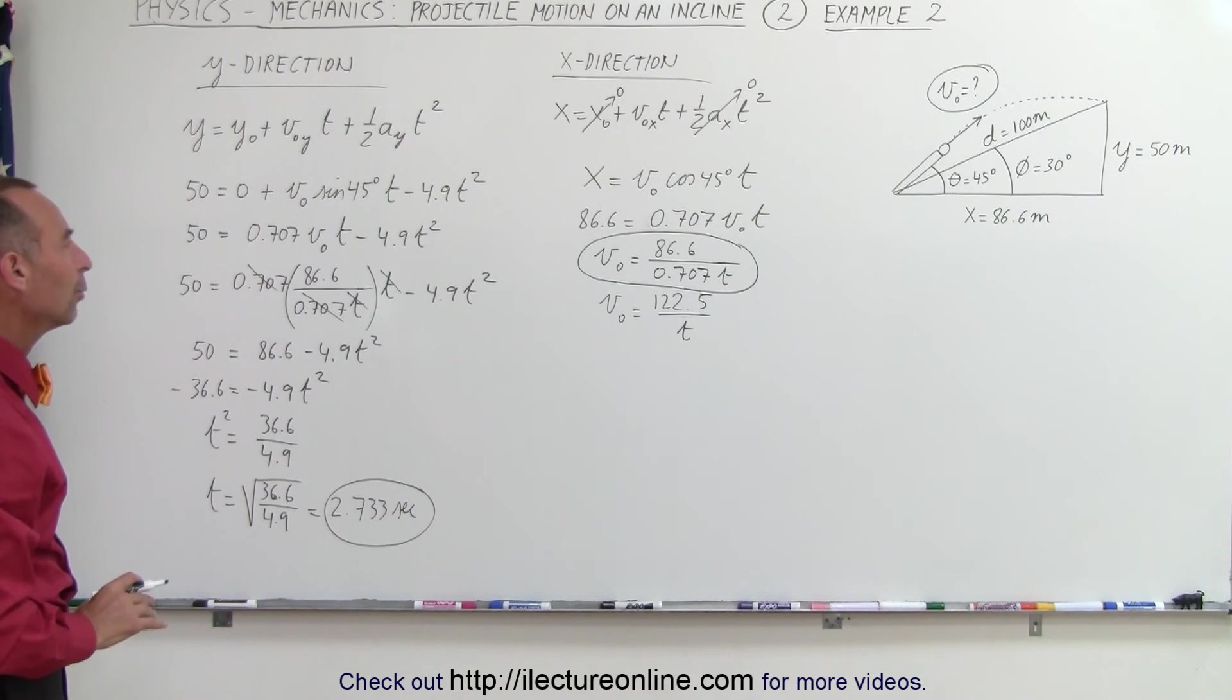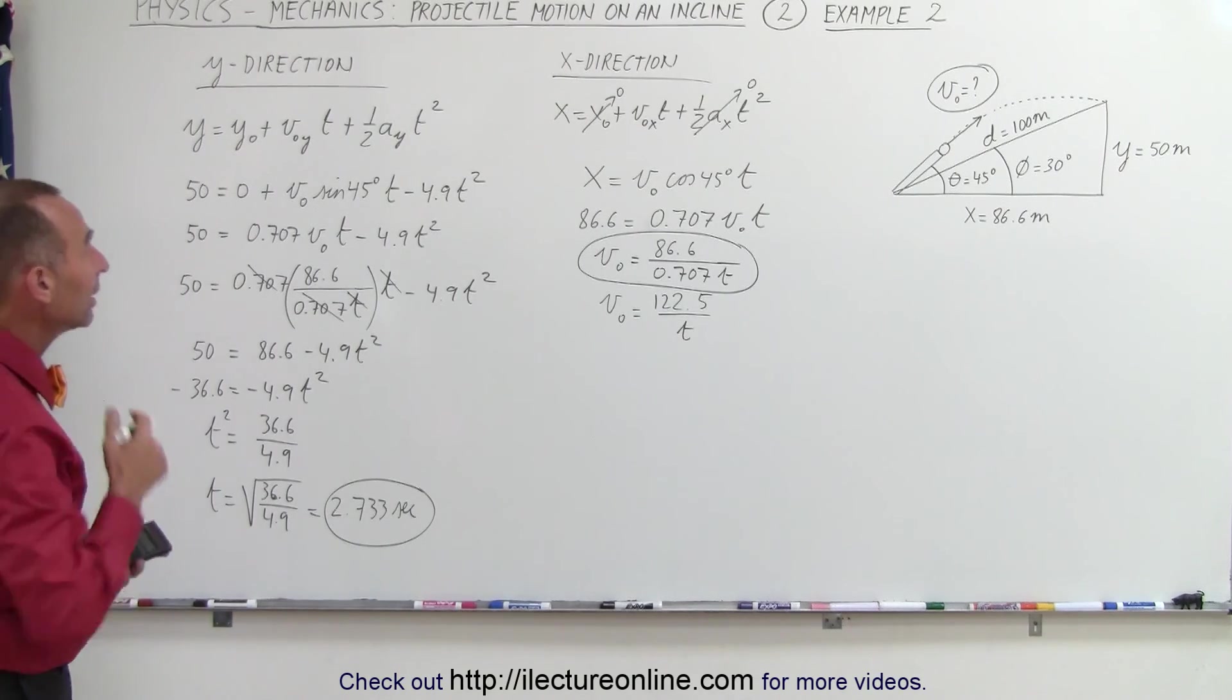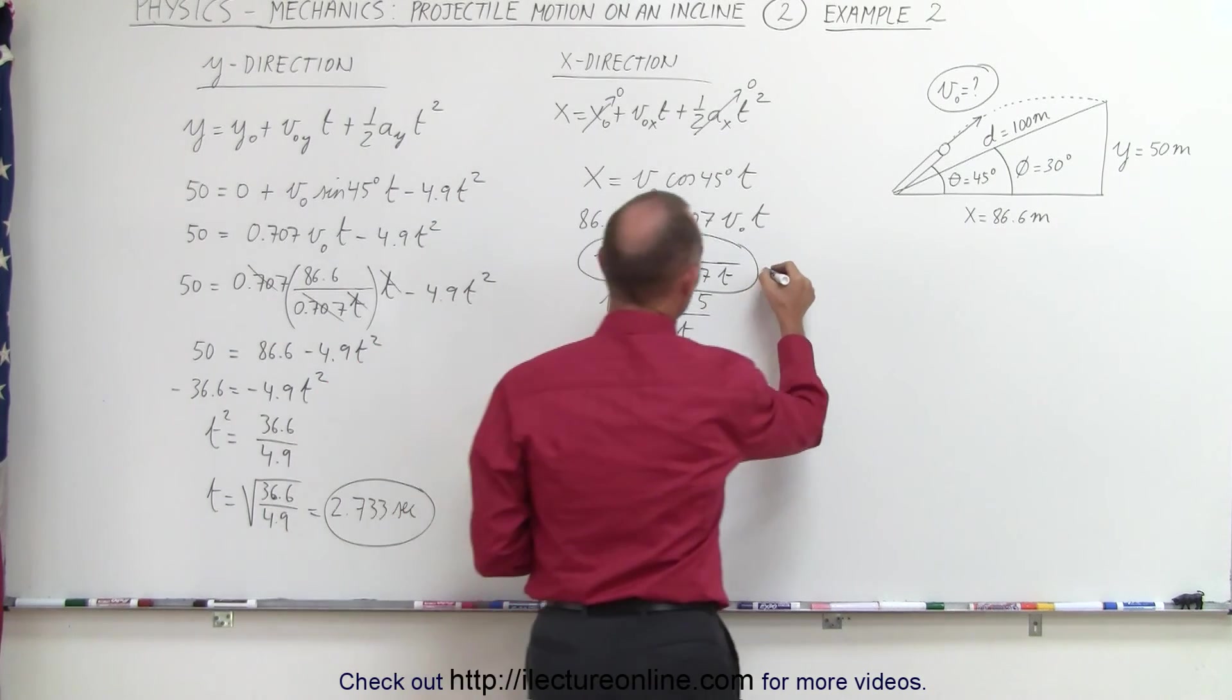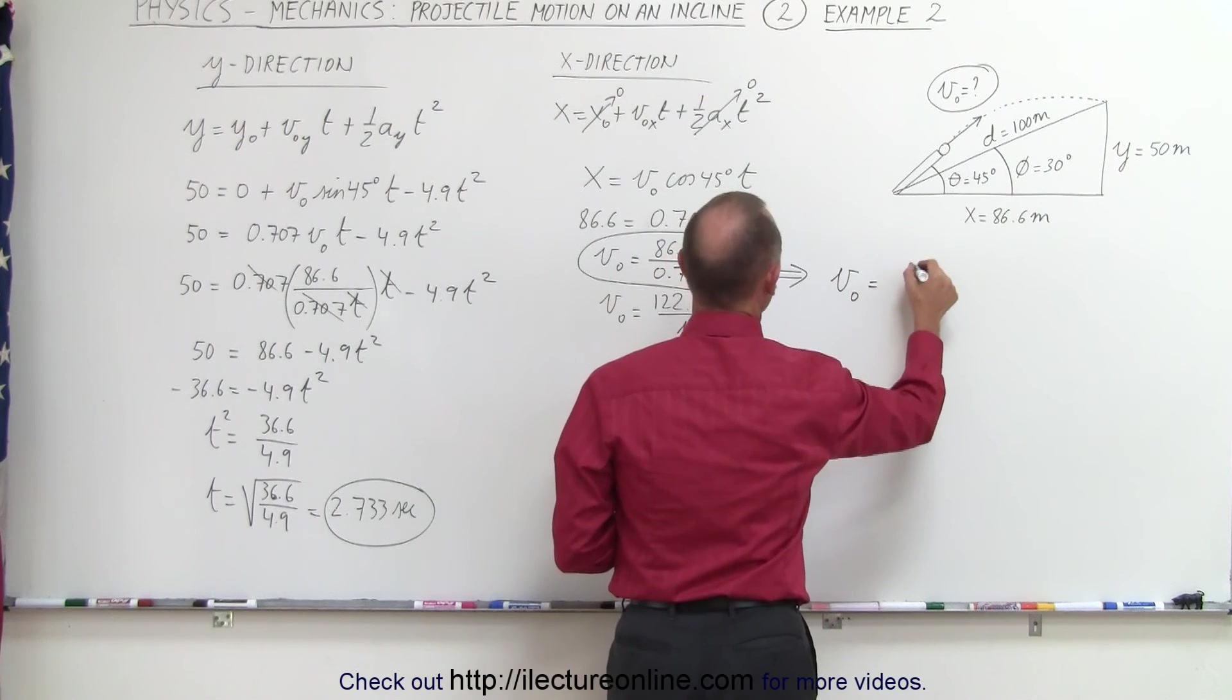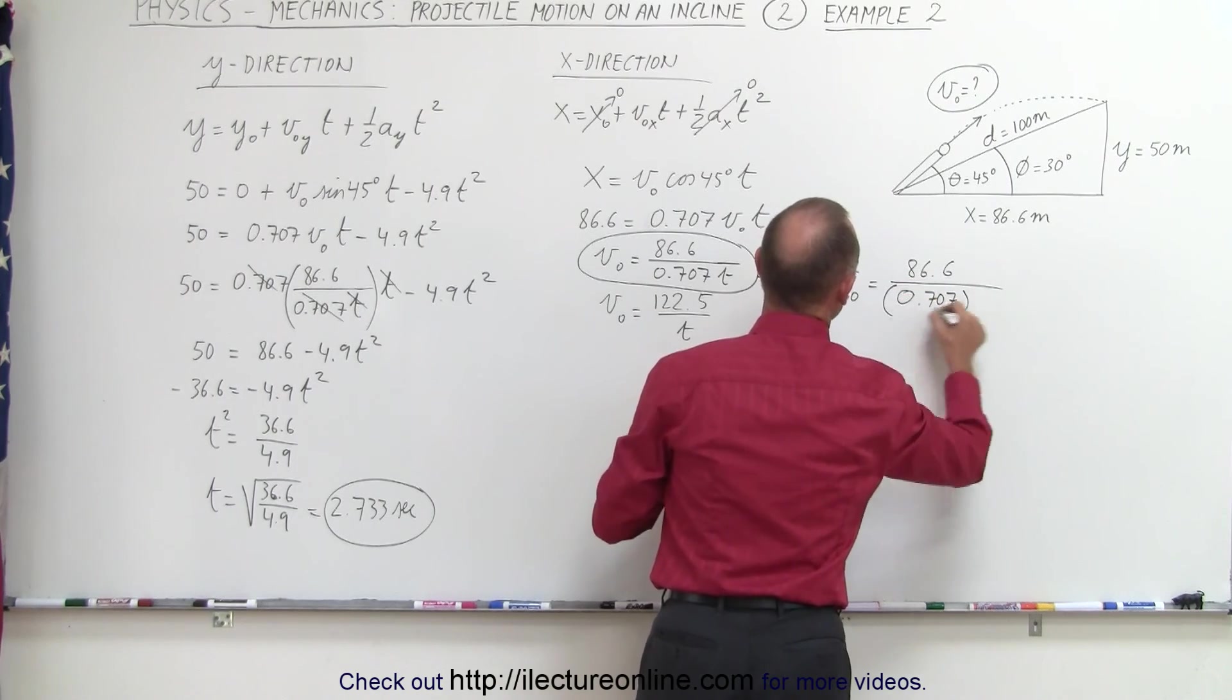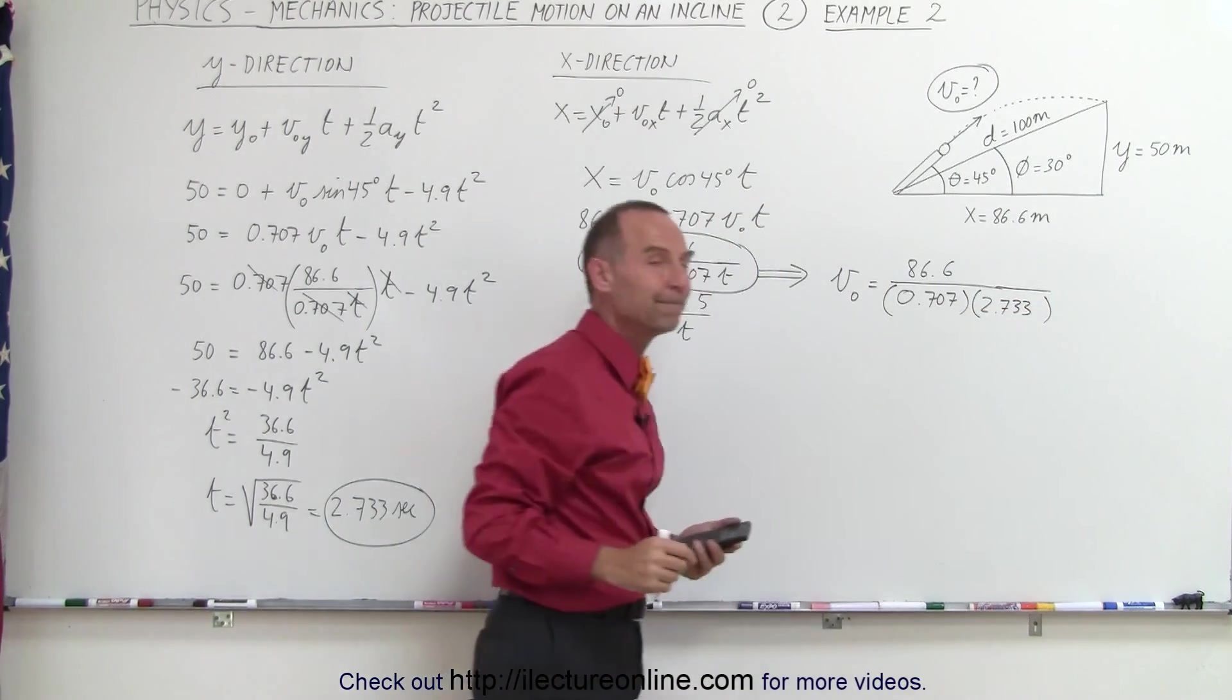Now that we have the time, we can use this equation to find out v initial. So we can say that v initial equals 86.6 divided by 0.707 and multiply that times the time in the denominator, which is 2.733 seconds.